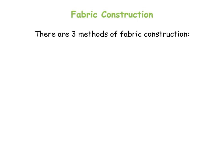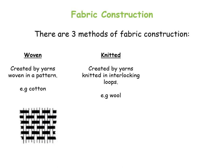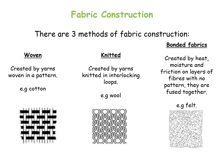Fabric construction — there are three methods of fabric construction. Woven fabrics are made in a pattern where the lines of yarn go over one and under one. Knitted fabrics are created by interlocking loops. Lastly, bonded fabrics are created by heat, moisture and friction in layers — these are fused together, and they can also be fused with glue.